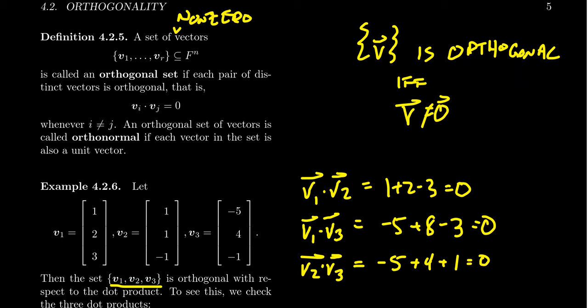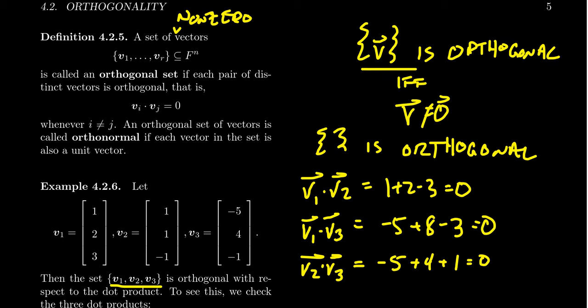Also, the empty set is considered an orthogonal set for the same reason — there are no vectors inside that set, so there are no pairs of vectors, meaning there exist no pairs which are not orthogonal and no dot products that give you non-zero. So a single vector is orthogonal, the empty set is orthogonal, but if you have two or more vectors, you do have to check, as in the example above, that each dot product between distinct pairs is zero.